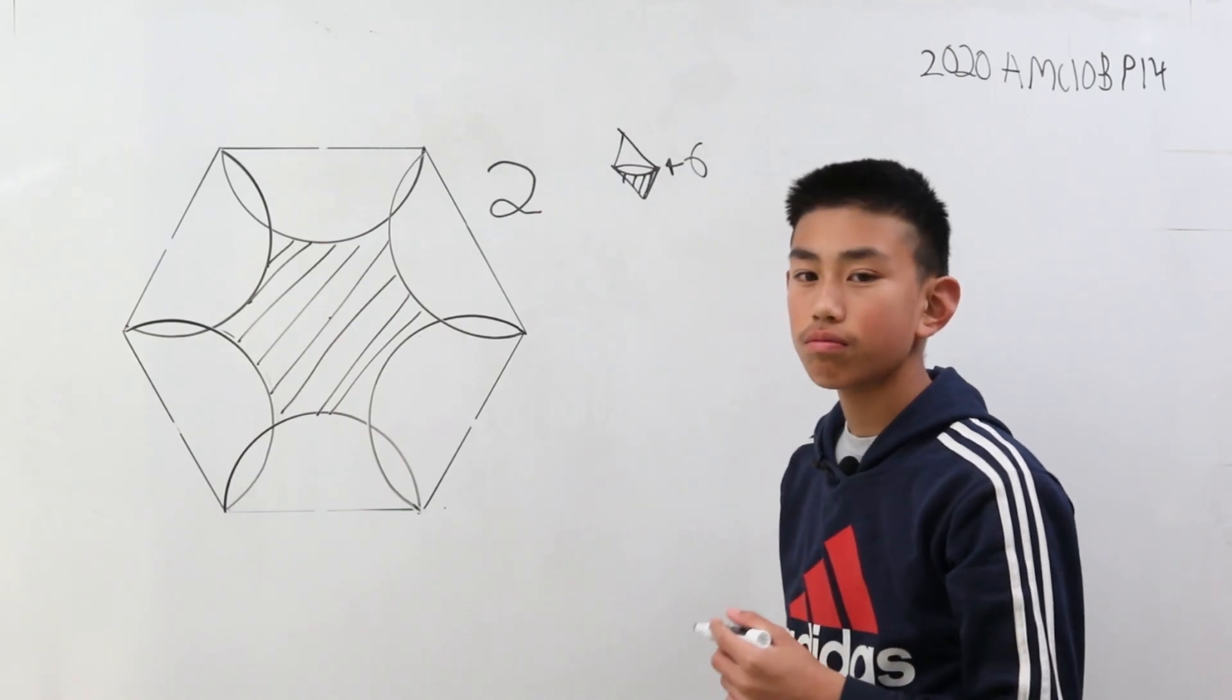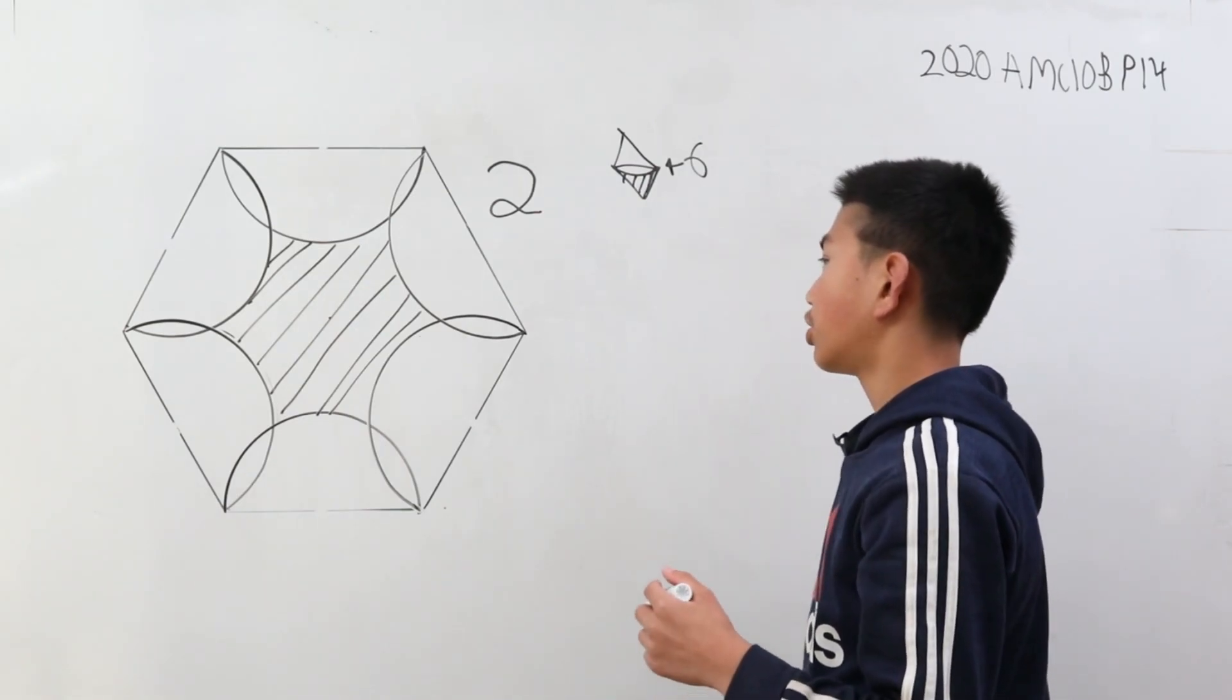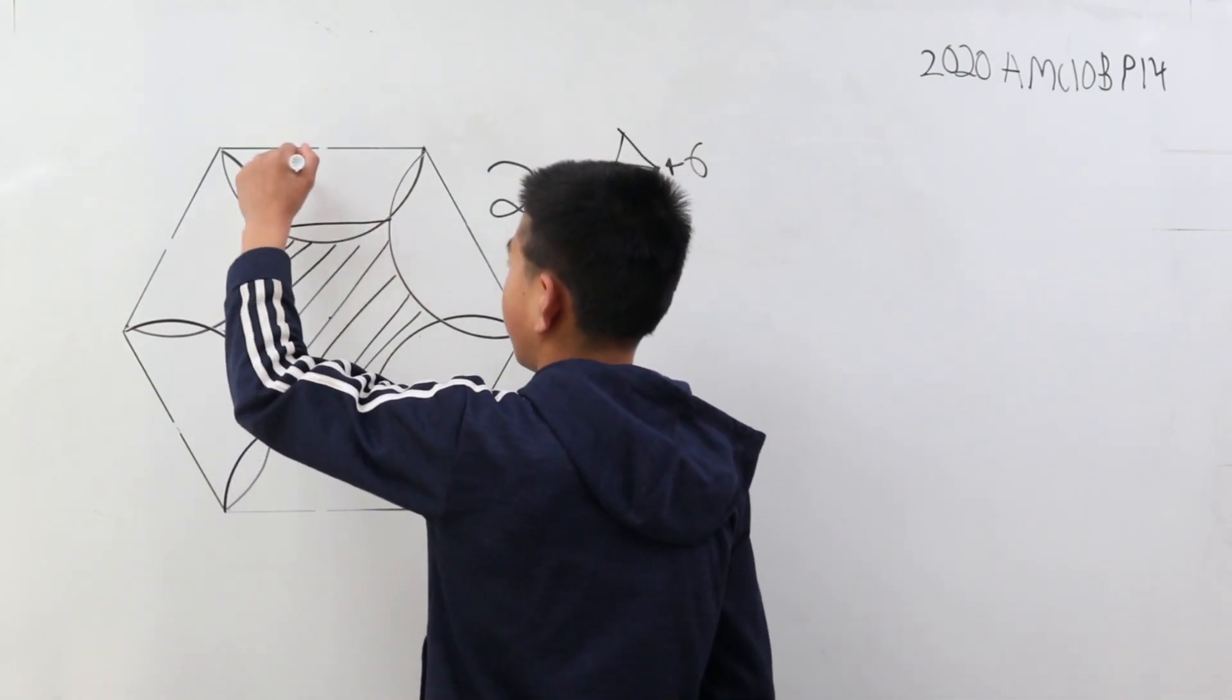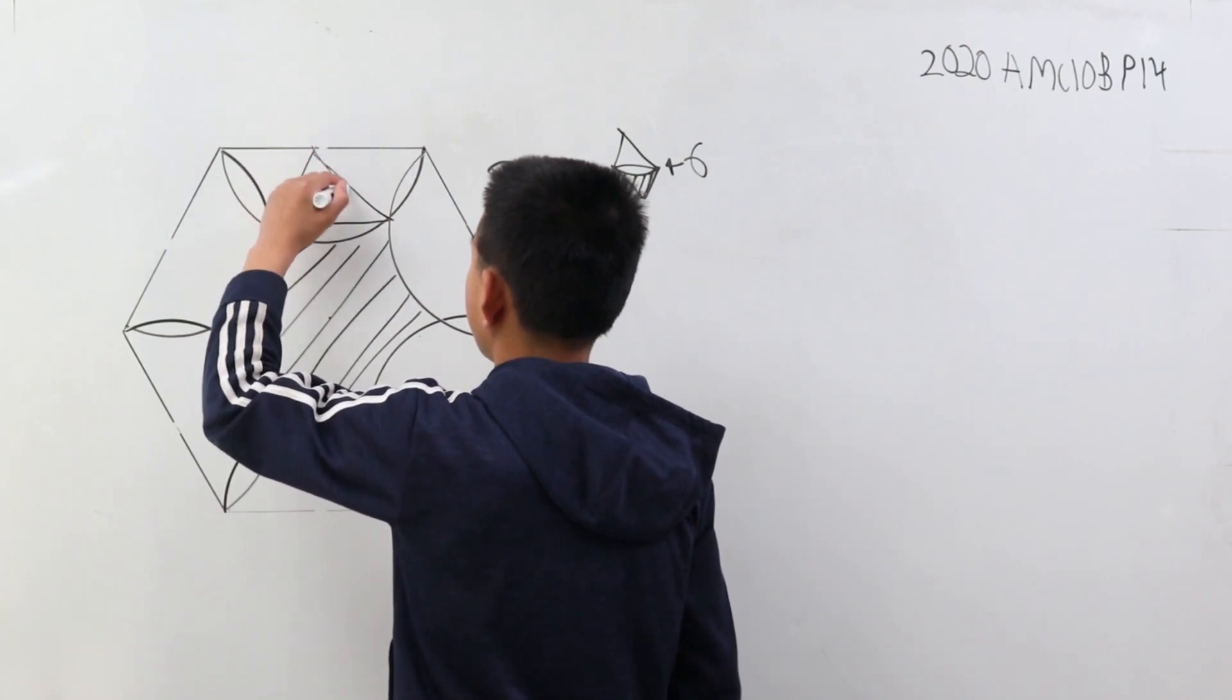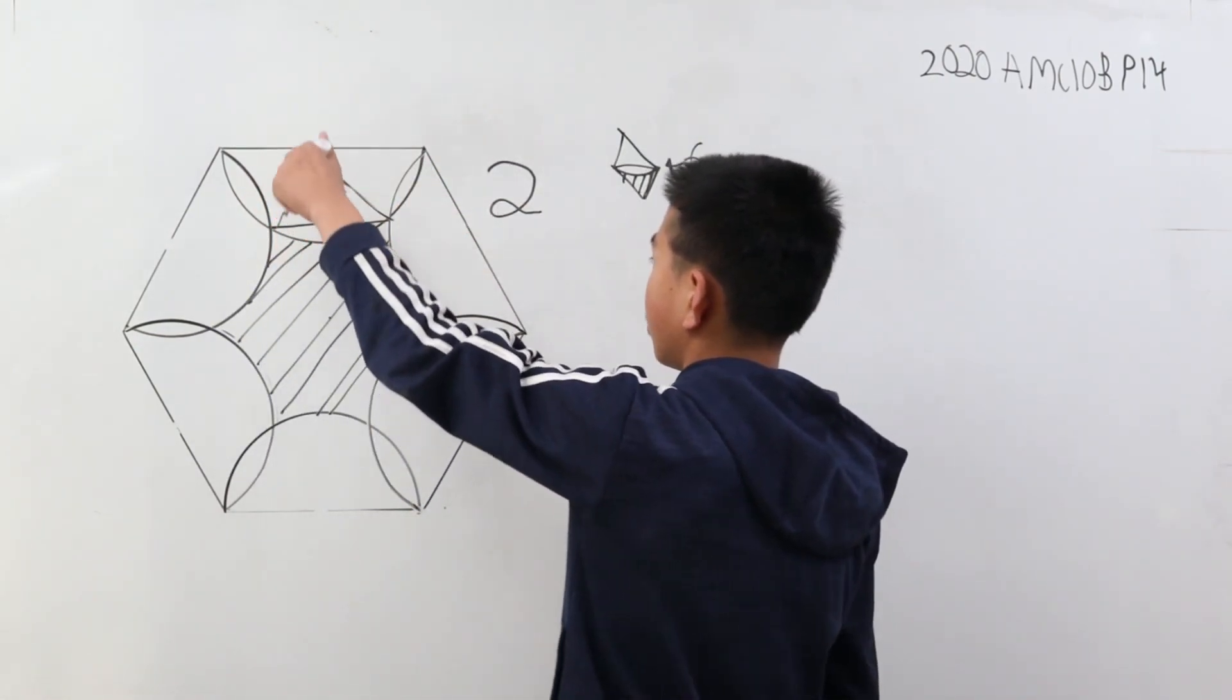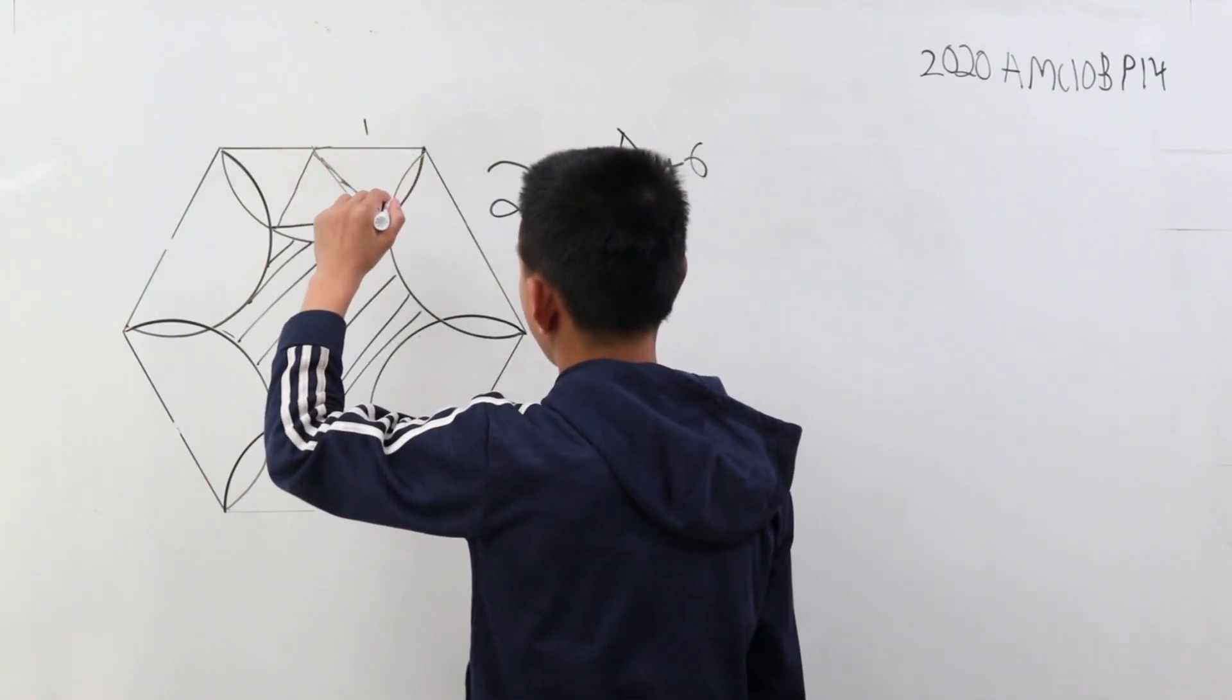Now we want to find how much does one equilateral triangle have. Let's just draw it roughly like this. One equilateral triangle, or rather three here. If this is two, this is cut in half, this is one, one, and one.